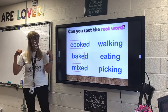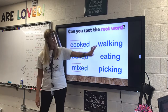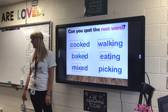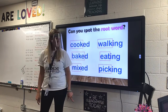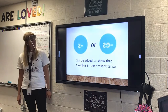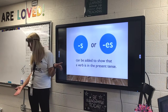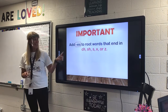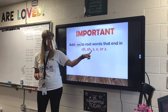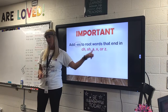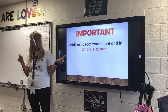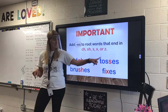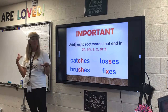'Walking' — walk. How about 'eating'? Eat. 'Picking'? Pick. You guys are so smart — like a toothpick! Now we can add an S. Sometimes we have to add an ES to show it's happening now. Important: add an ES to the root word that ends in CH, SH, S, X, or Z. We will learn this all through second grade, but just know that sometimes we have to add an E and then an S — for example, catches, brushes, tosses, fixes.